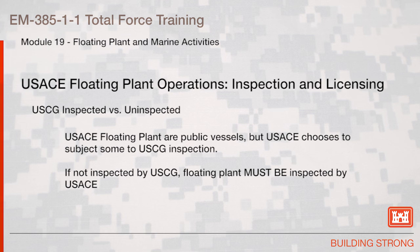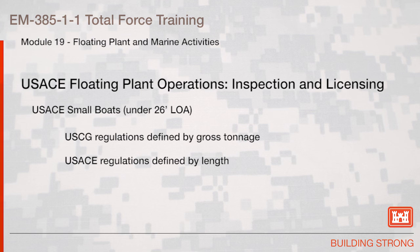The following highlights inspection and licensing requirements for U.S. Army Corps of Engineers floating plant operations. U.S. Coast Guard inspected versus uninspected vessels: U.S. Army Corps of Engineers floating plants are public vessels, but the Corps chooses to subject them to some U.S. Coast Guard inspection. If not inspected by the U.S. Coast Guard, floating plants must be inspected by the U.S. Army Corps of Engineers. Small boats under 26 feet LOA are subject to U.S. Coast Guard regulations as defined by gross tonnage, and subject to U.S. Army Corps of Engineers regulations defined by length.